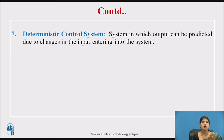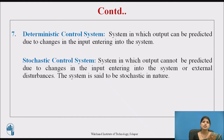The next types are deterministic and stochastic control systems. Deterministic means a system in which the output can be predicted due to changes in the input entering the system — the response to inputs and the behavior under external disturbances is predictable and repeatable. Stochastic means a system in which the output cannot be predicted due to changes in the input; such a system is said to be stochastic in nature.